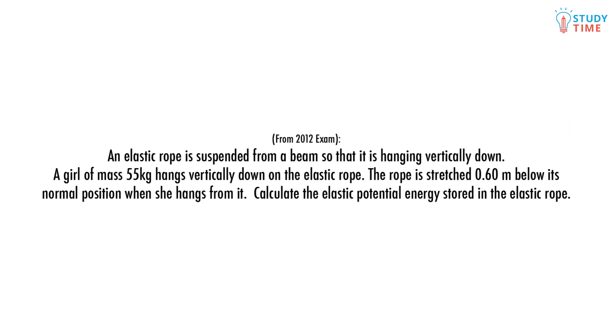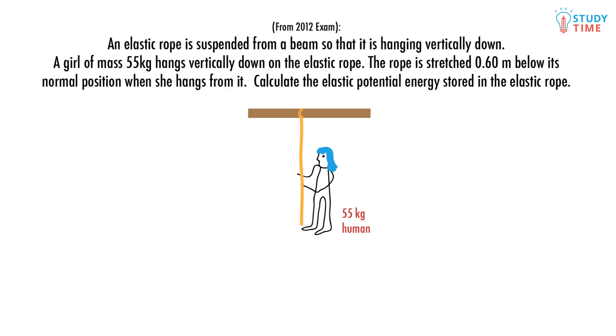An elastic rope is suspended from a beam so that it is hanging vertically down. The girl of mass 55 kilograms hangs vertically down on the elastic rope. The rope is stretched 0.6 meters below its normal position when she hangs from it. Calculate the elastic potential energy stored in the elastic rope.